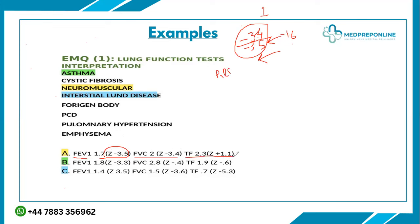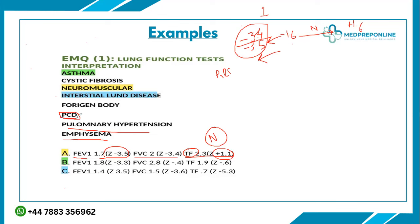Continuing Case 1: the transfer factor is 2.3 with z-score plus 1.1, which falls within the normal range (between minus 1.64 and plus 1.64). So we have a restrictive pattern with normal DLCO. Diseases with restrictive pattern and normal DLCO are neuromuscular disorders, chest wall problems, and pleural disorders — making this most likely a neuromuscular disease.